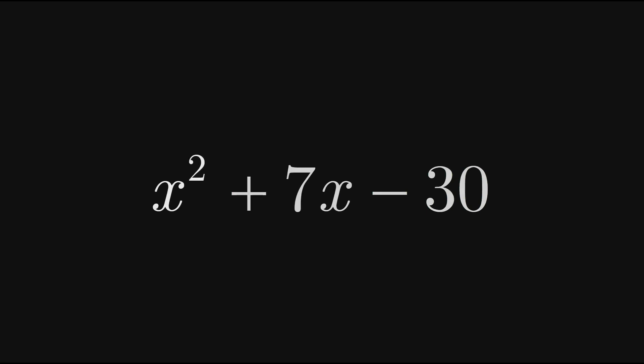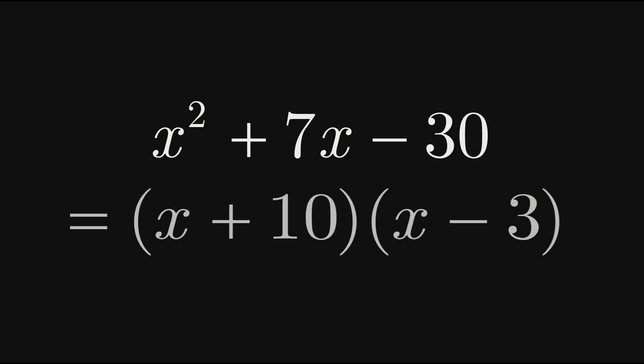Specifically, we'll be looking at cases in which the x squared term has a coefficient of 1. Factoring these expressions will give us results that look like this: a binomial multiplied by another binomial.